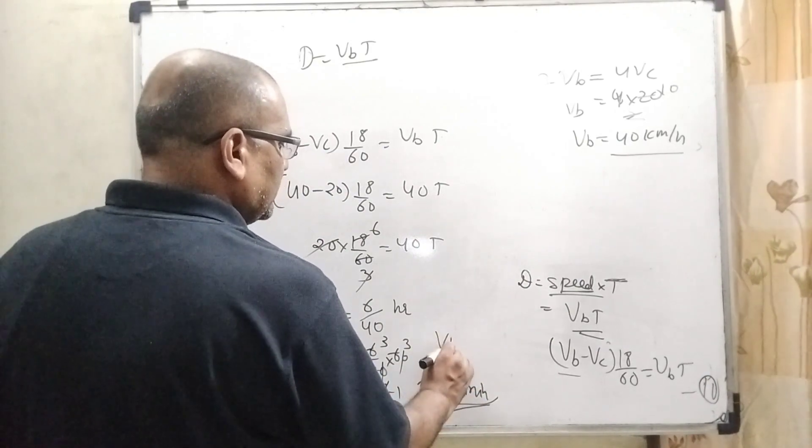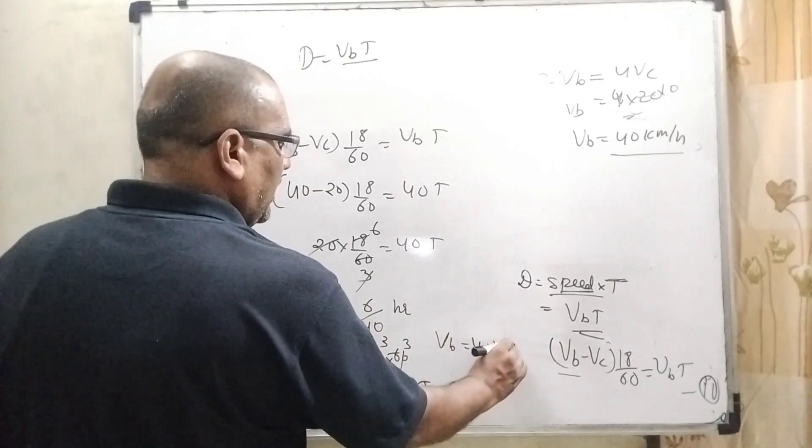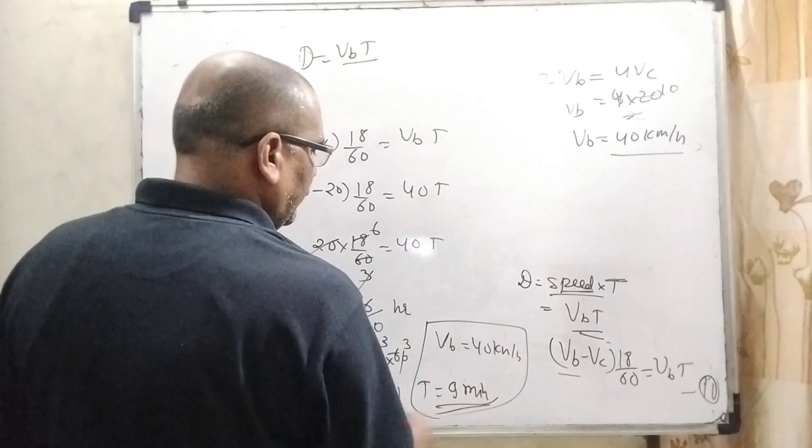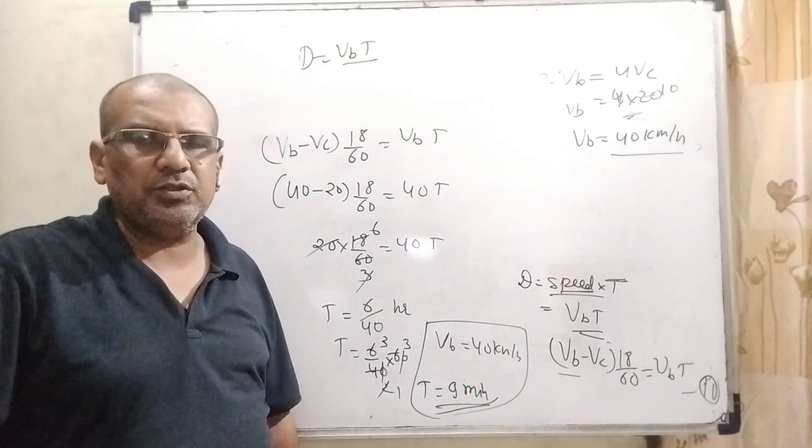So here are the two answers: speed of bus 40 km per hour and time period or time interval is 9 minutes. I hope you understood this question.